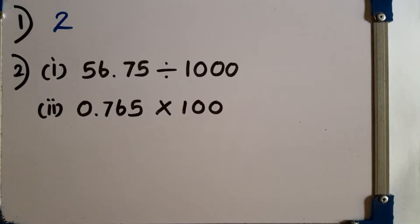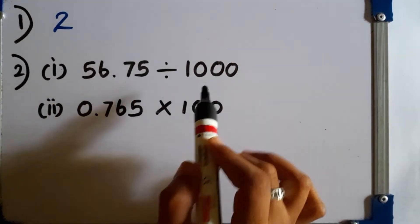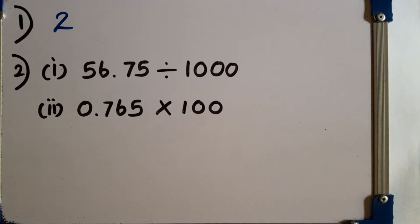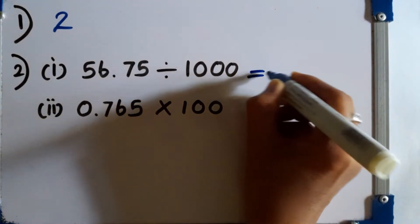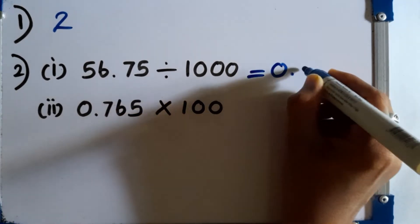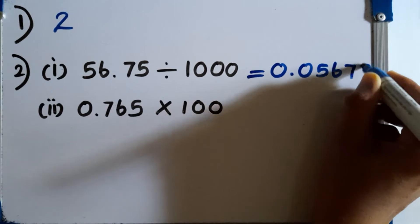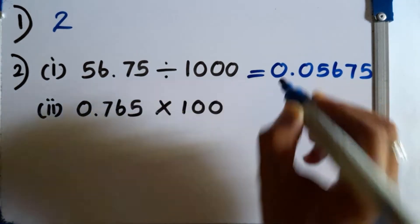Question number 2. Find the value. First one: 56.75 divided by 1000. When we are dividing a decimal number by 1000, the decimal point goes 3 places to the left side. So the answer will be 0.05675.